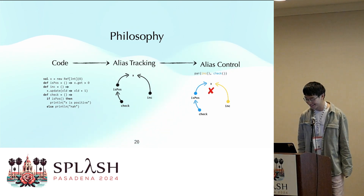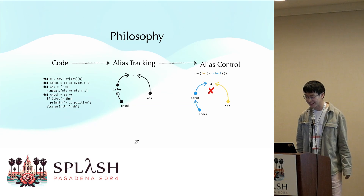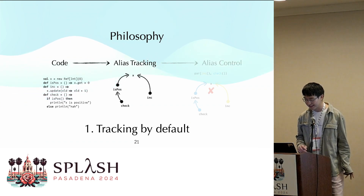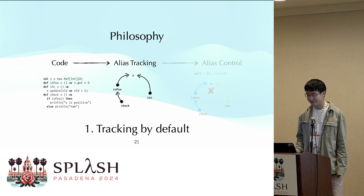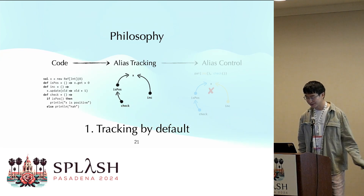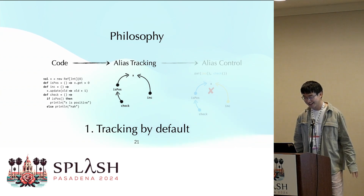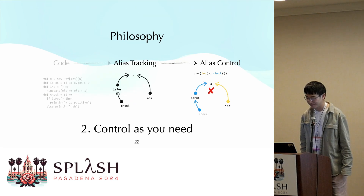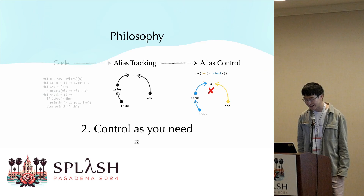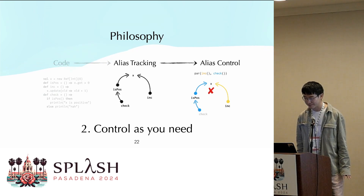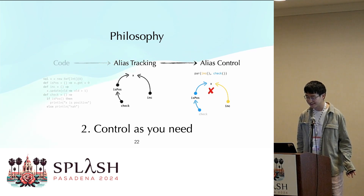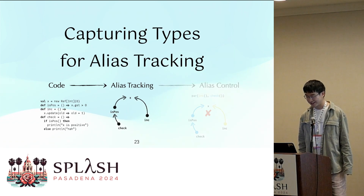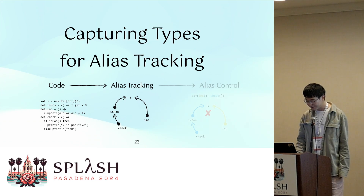Our system is a lean approach to safe concurrency. It consists of two steps. The first step is tracking: aliases are tracked by the type system, but there is no alias controlling or prevention by default. You are allowed to write your code the old way, making full use of aliases, and the code will be accepted. Our system will do its best to track these aliases. Then, only when data races become a concern does the second step activate: the system looks at tracked aliases and lets alias prevention mechanisms come into play, obtaining a static safe concurrency guarantee.